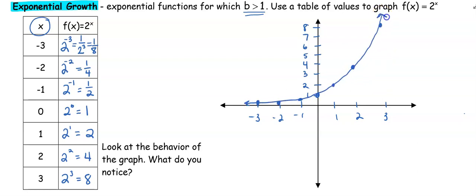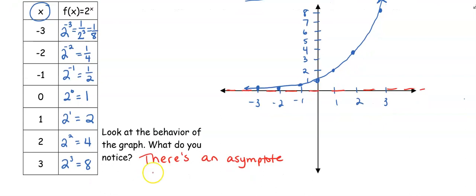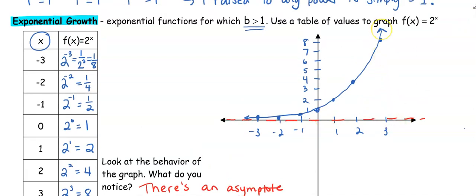So here's our function. As I go to the left, my fractions were 1/2, 1/4, 1/8 — look at the behavior of the graph. These numbers are going to get smaller and smaller, but no matter what I do, it's never going to be equal to 0. So what we have here is a horizontal asymptote at y equals 0. My graph is going to approach 0 but never actually get there. We call this exponential growth because as x gets larger, our numbers grow exponentially — going from 2 to 4 to 8. Because our base was 2, our numbers are doubling each time.